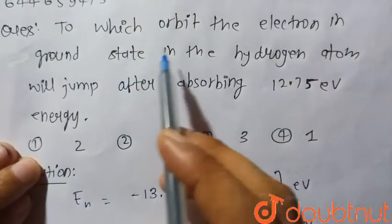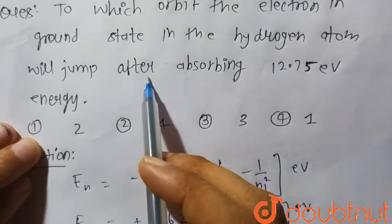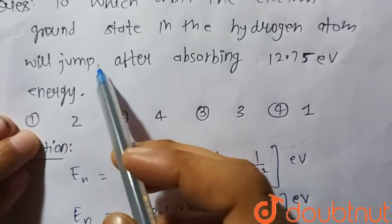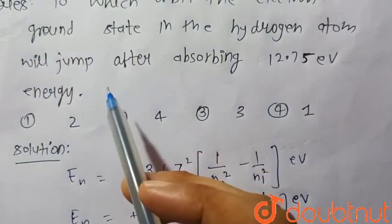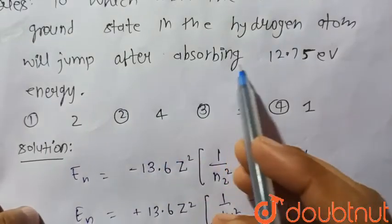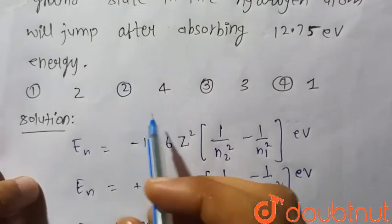Hence the electron in ground state in the hydrogen atom will jump to the fourth state, that is n is equal to 4 or the fourth orbit after absorbing the 12.75 electron volt energy.